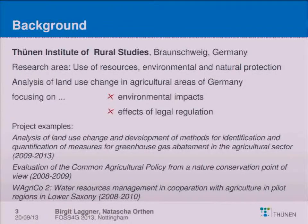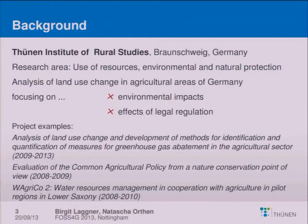Both of us are working at the Thüringen Institute of Rural Studies at Brunswick, Germany. The research area is the use of resources, environmental and natural protection. In particular, we analyze land use change in agricultural areas of Germany, focusing on environmental impacts and effects of legal regulation. You can see three project examples; the current project and the presented GIS toolbox can be seen as a result of all these three projects.